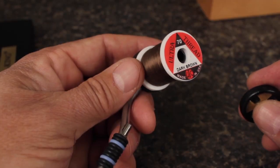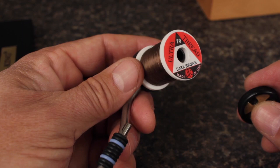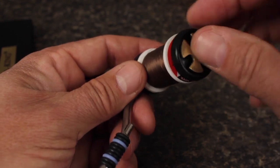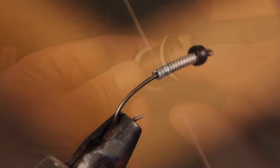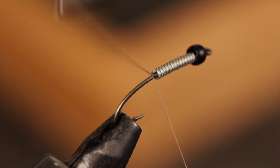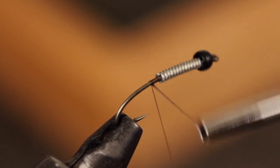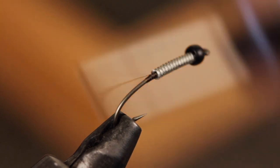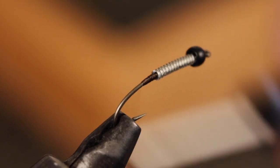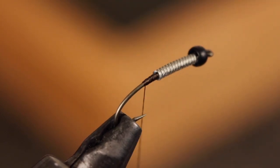For thread, I'm going to load a bobbin with 70 Denier Ultra Thread in dark brown. Start your thread on the hook immediately behind the weight and after a few wraps snip or break the tag end off close. Then build up a little ramp and thread dam to ease the transition up to the weight.